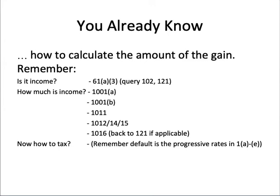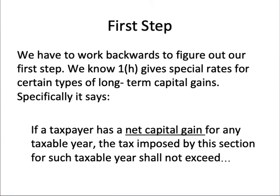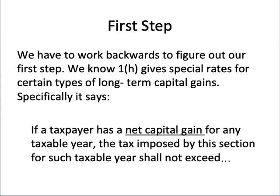Let's figure out whether or not we can qualify for the preference. Let's talk about the analytical process. What is the first step? In order to determine that, we actually have to work backwards from §1H. When we look at §1H, it talks about a taxpayer with a net capital gain being somebody who qualifies for §1H. So when we trace back net capital gain, we see that this takes us to §1222, and net capital gain is defined as net long-term capital gain minus net short-term capital loss.